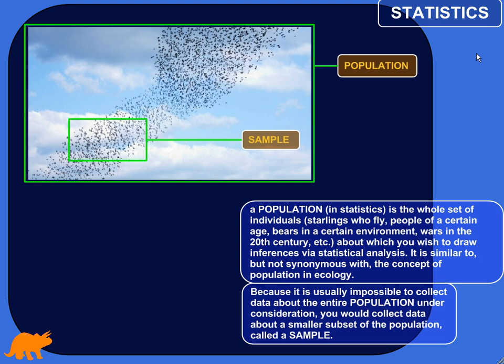For example, maybe you want to study the behavior of honeybees who live on commercial honey farms. Your population wouldn't be every single honeybee in the world or every honeybee that has ever lived. But your population would be honeybees who live on commercial honey farms. Then you want to do some kind of statistical analysis of their behavior — maybe how often they get sick or how much honey they produce — to see trends and draw inferences about that group.